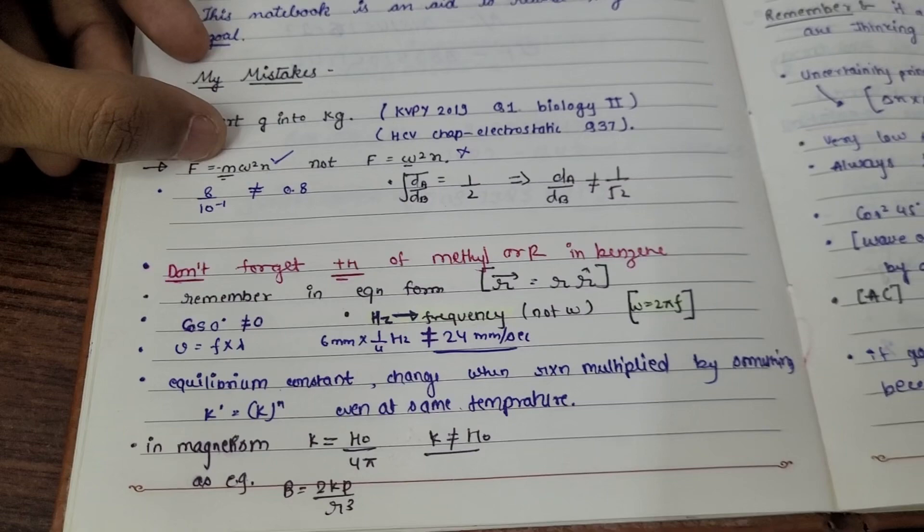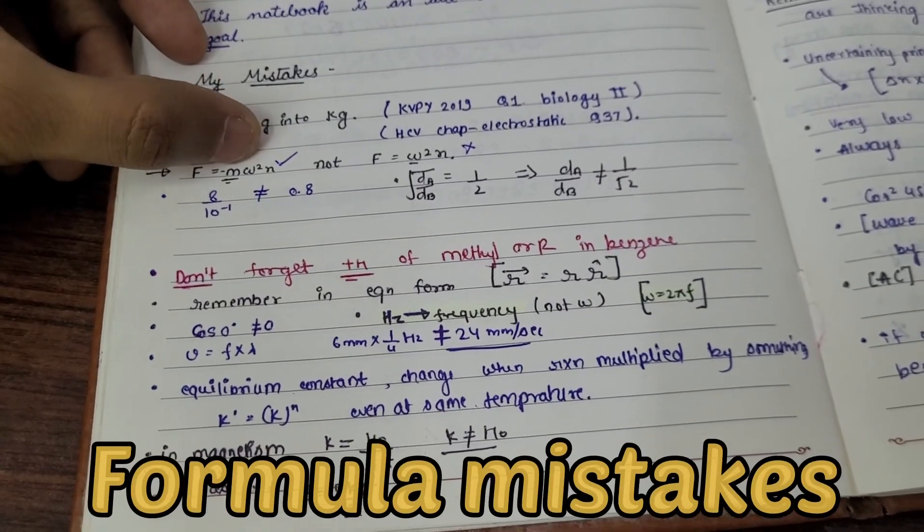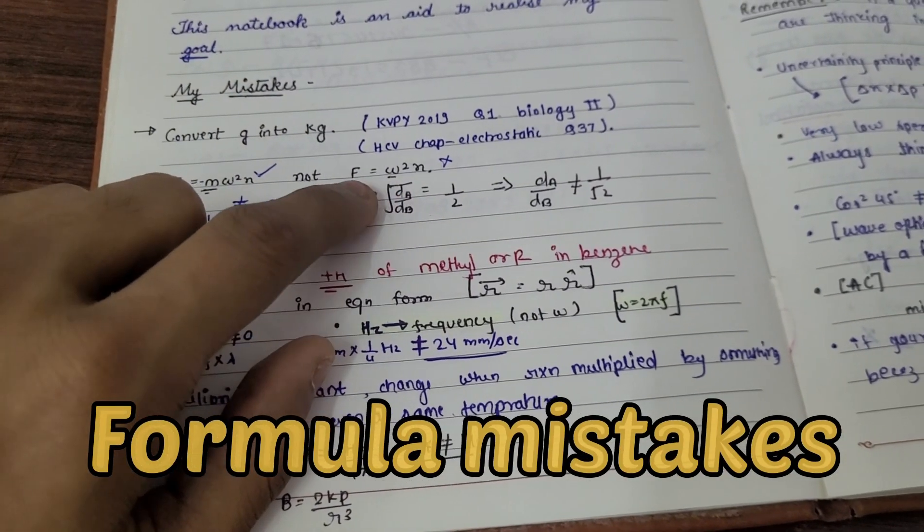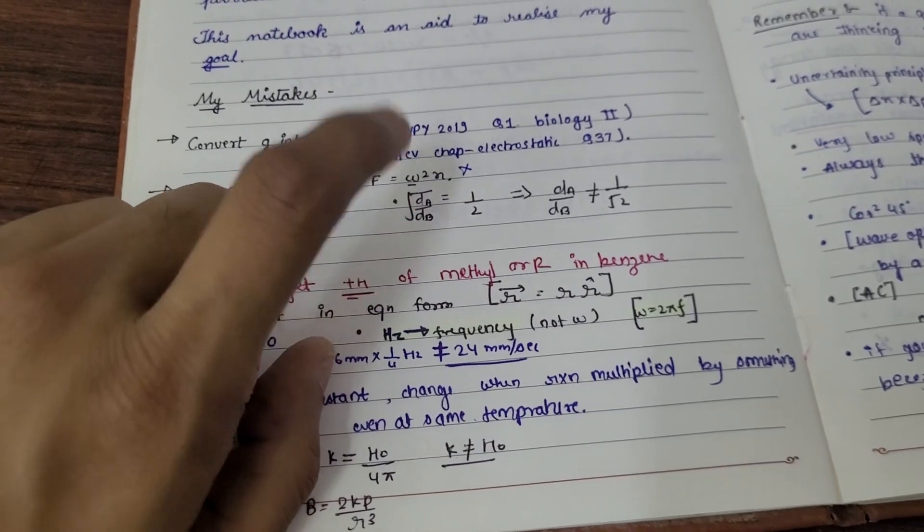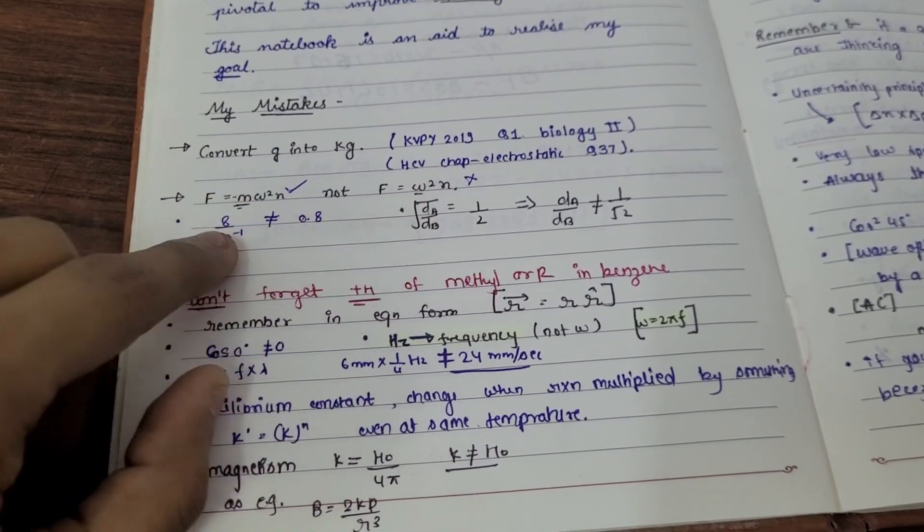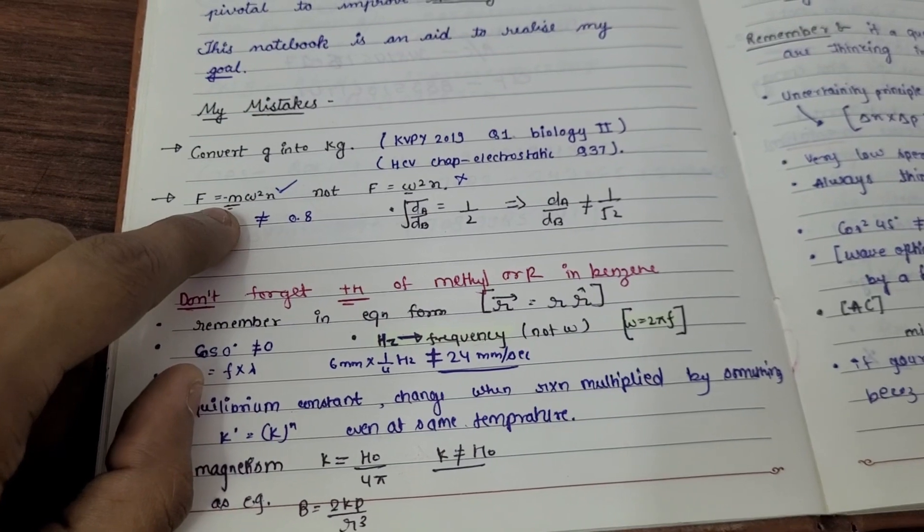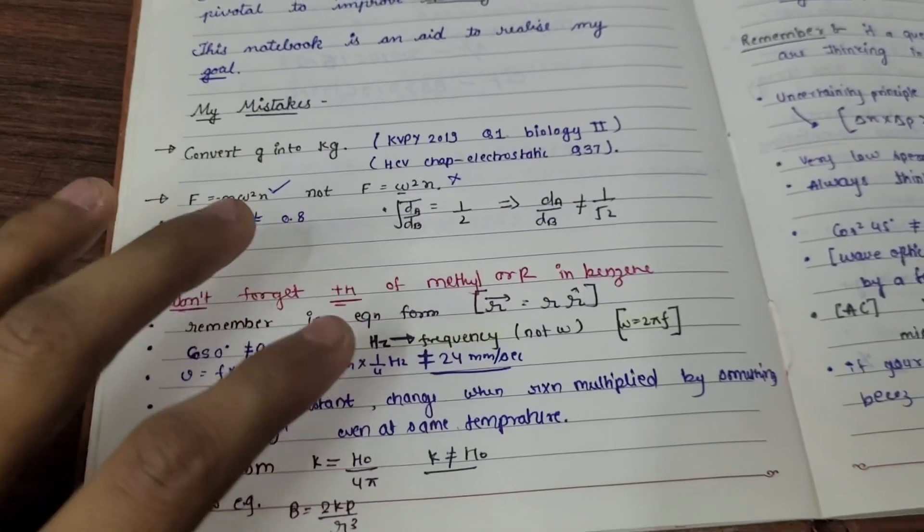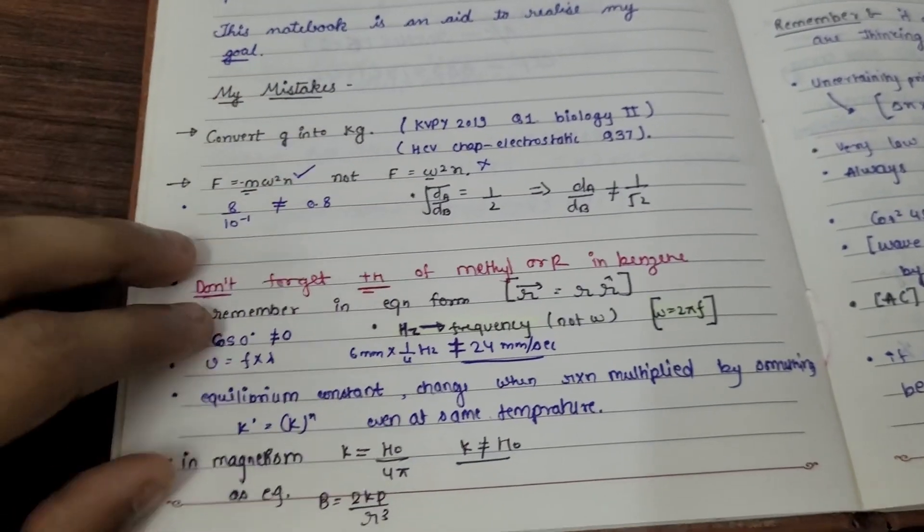For example, you can see formula is this formula but I actually solved this in a particular question. So I have mentioned that I have used this formula but I should use this formula. So I am just emphasizing my mistake so that this mistake is not going to be done. I am looking at other mistakes.